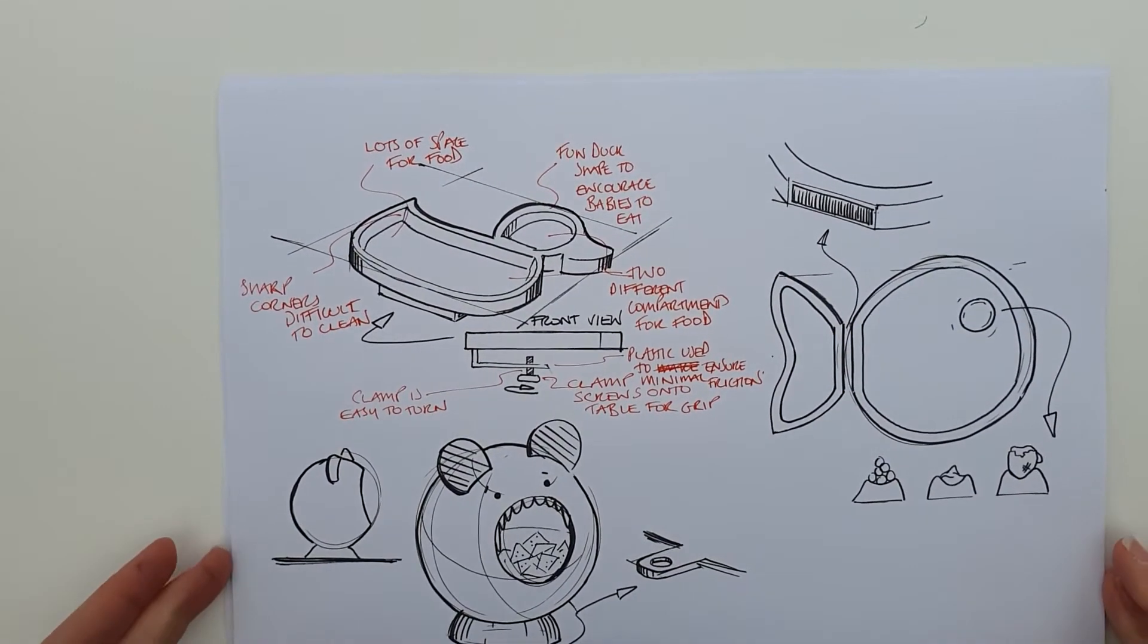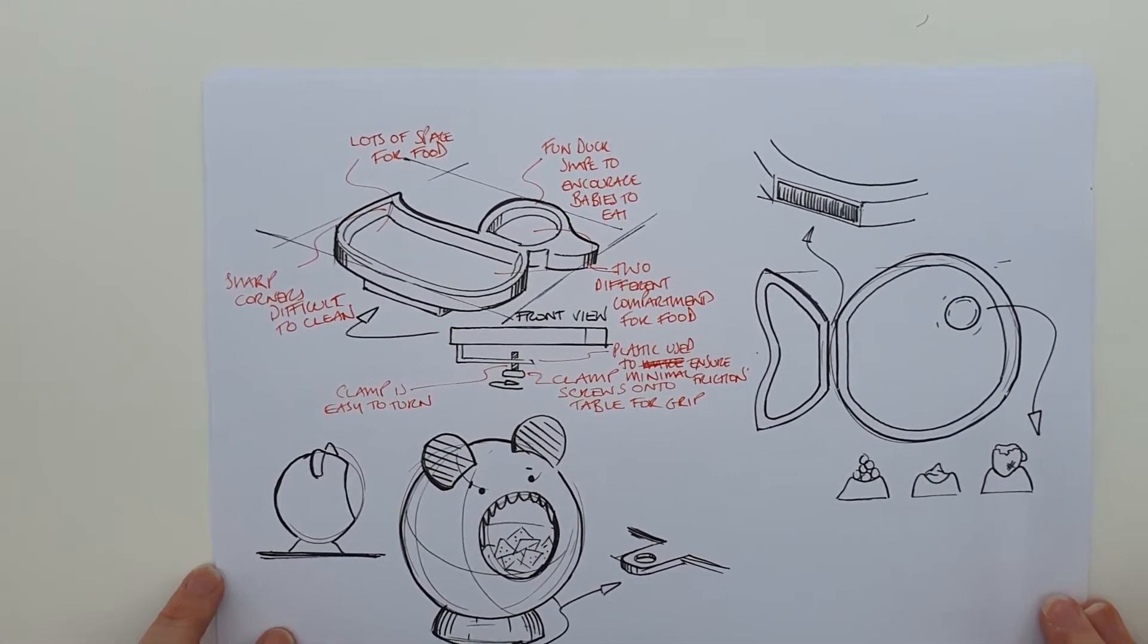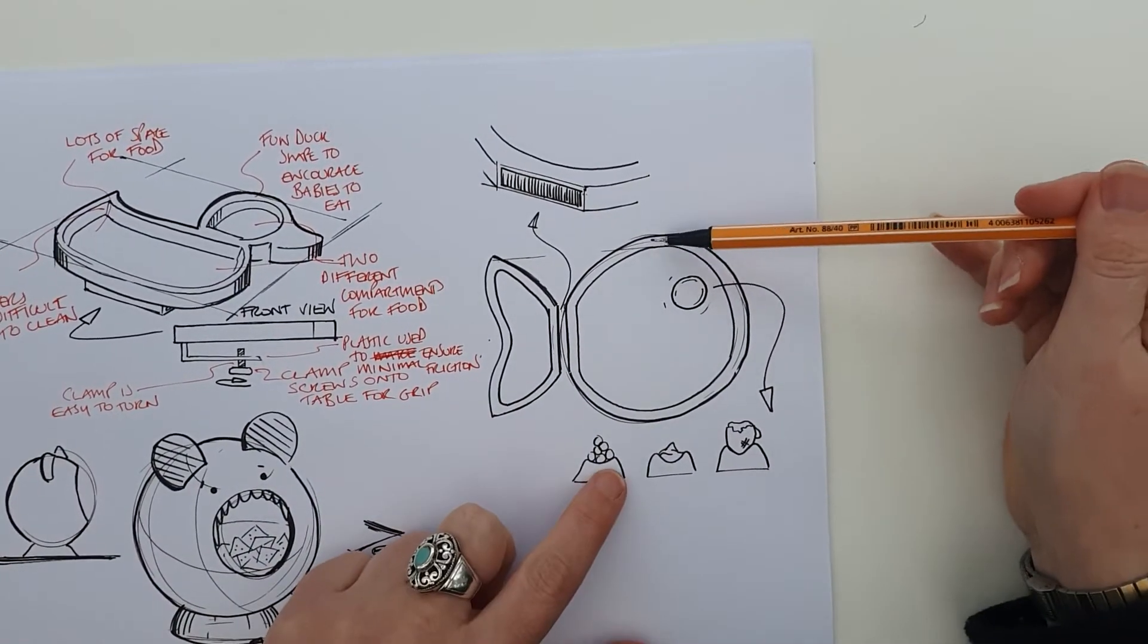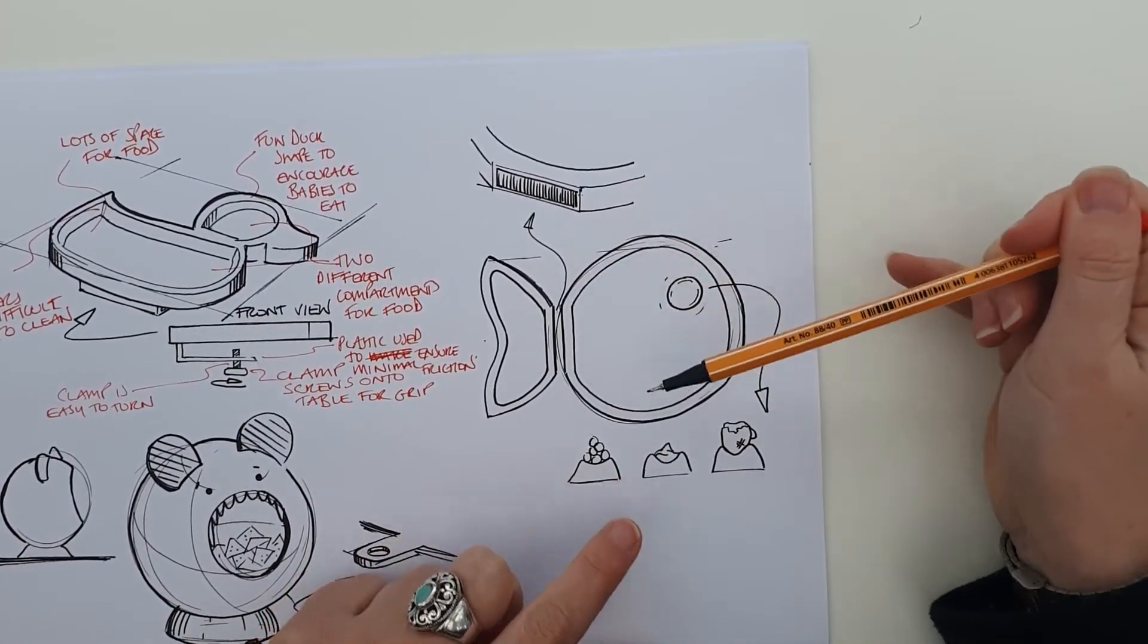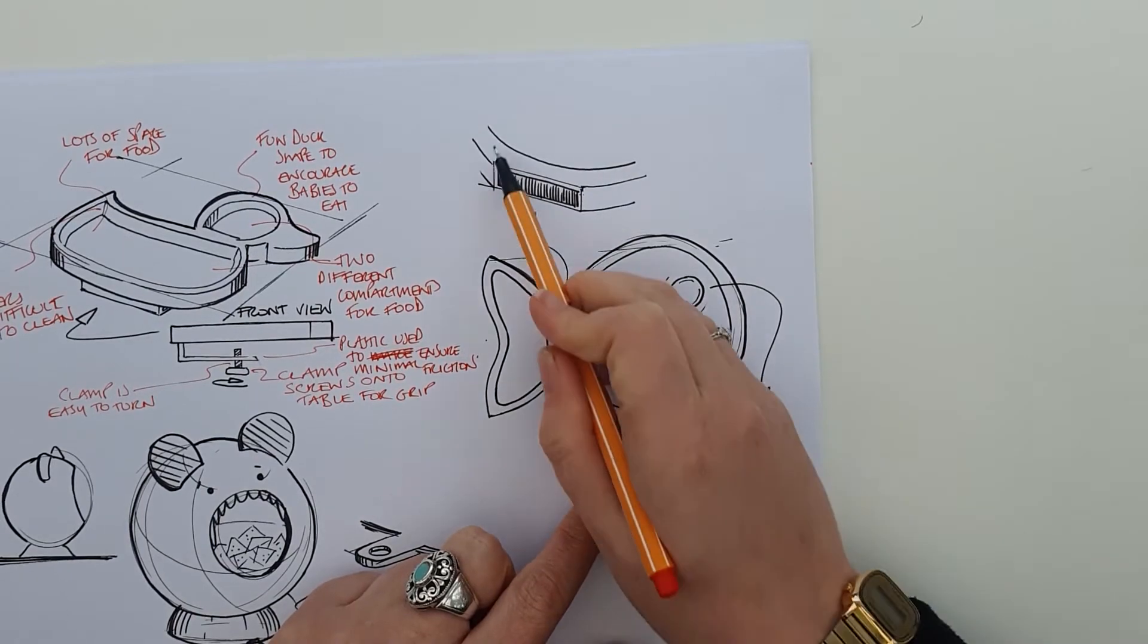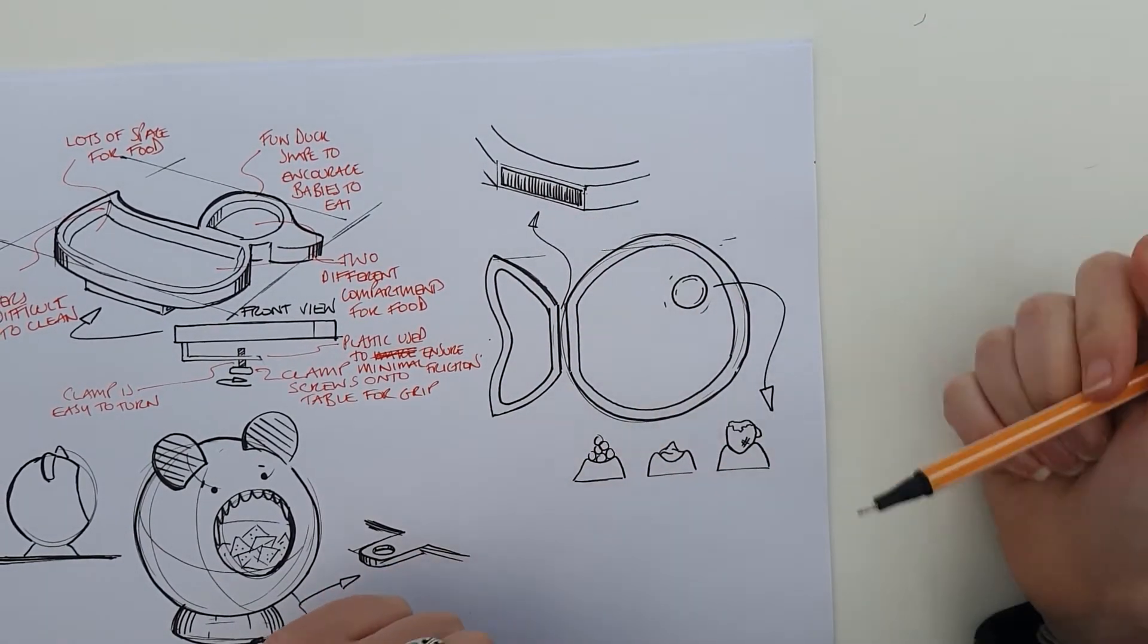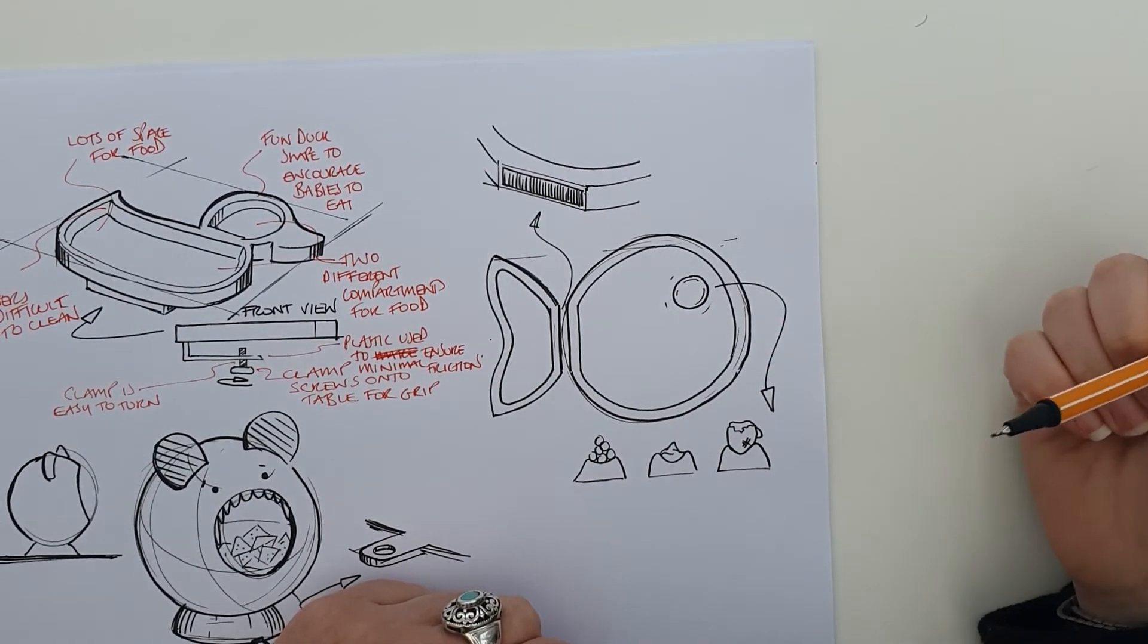We'll move on to this one here. Again, I've got a big sketch which is 2D this time, and I've done sketches around it to explain parts further, and I'm just going to annotate these now as we go.